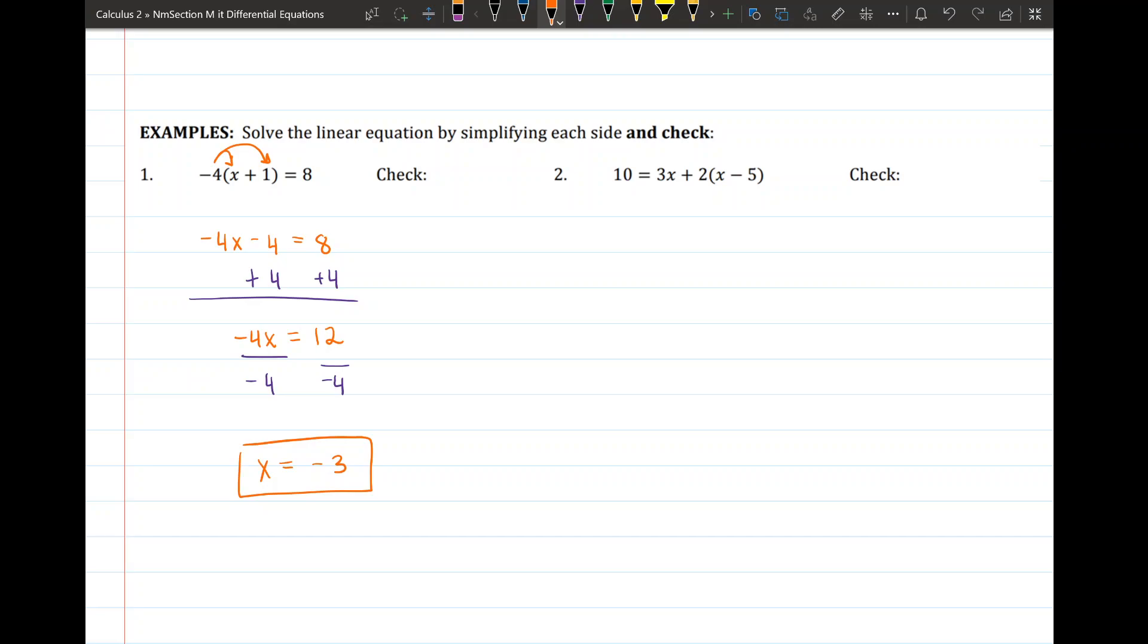How would I check my work? Well I can check my work by plugging in negative 3 for x. I can simplify in the parentheses negative 2 and this is equal to 8 so it works.